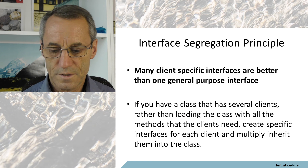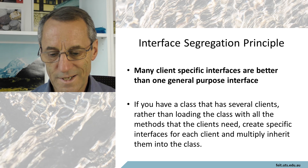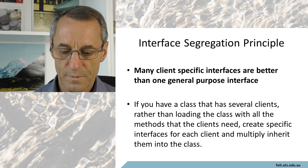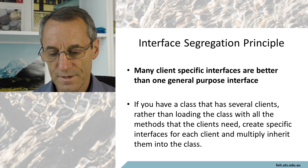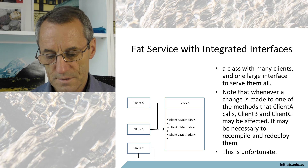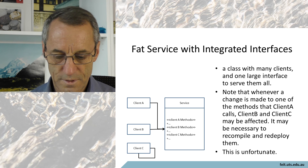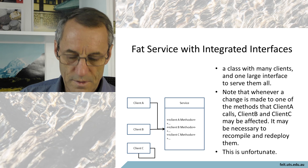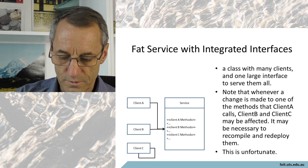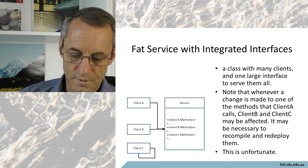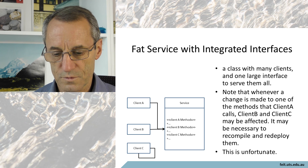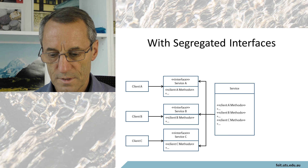Returning to the Interface Segregation Principle: many class-specific interfaces are better than one general-purpose interface. If you have a class with several clients, rather than loading up the class with all the methods the clients need, create a specific interface for each client and multiply inherit them into the class. With a fat service and one large interface serving all clients, whenever a change is made to a method that client A calls, clients B and C might be affected, requiring recompile and redeploy. With segregated interfaces, you avoid this unnecessary maintenance and potential source of bugs.